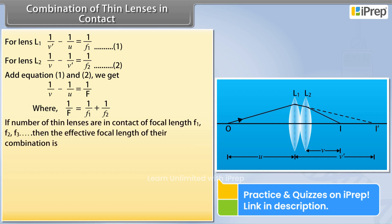If the number of thin lenses are in contact of focal length F1, F2, F3, then the effective focal length of their combination is 1 by F equals 1 by F1 plus 1 by F2 plus 1 by F3 and so on.